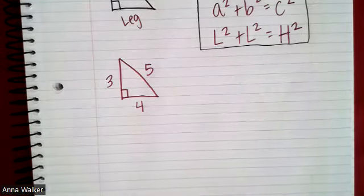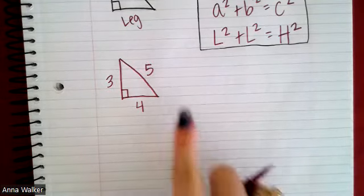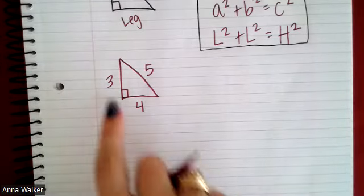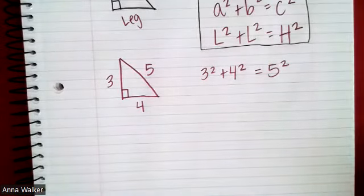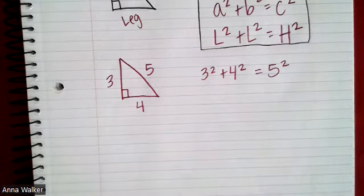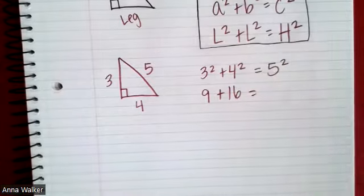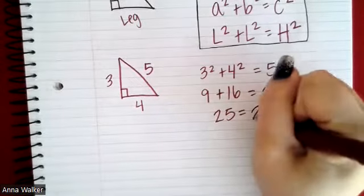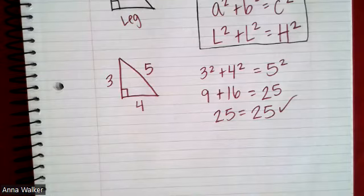If I want to check whether 3, 4, and 5 can be the three sides of a right triangle, I need to verify the Pythagorean theorem: does 3² + 4² equal 5²? Three squared is 9, four squared is 16, and five squared is 25. Does 9 + 16 = 25? Yes! So these can be the three sides of a right triangle.